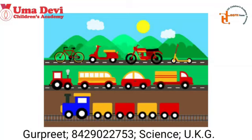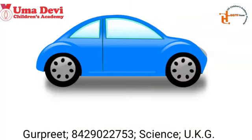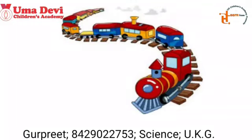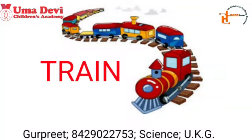The first vehicle which moves on land is car. What is this? Car. And what is the spelling of car? C-A-R. Repeat again. C-A-R. Car. Now let's see the next example. What is this? Yes, this is train. And what is the spelling of train? T-R-A-I-N. Repeat again. T-R-A-I-N. Train.